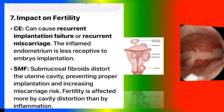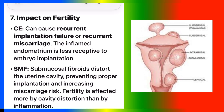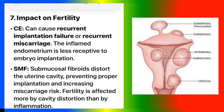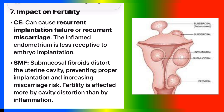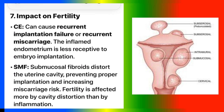Number seven: impact on fertility. CE can cause recurrent implantation failure or recurrent miscarriage. The inflamed endometrium is less receptive to embryo implantation. SMF — submucosal fibroids distort the uterine cavity, preventing proper implantation and increasing miscarriage risk. Fertility is affected more by cavity distortion than by inflammation.